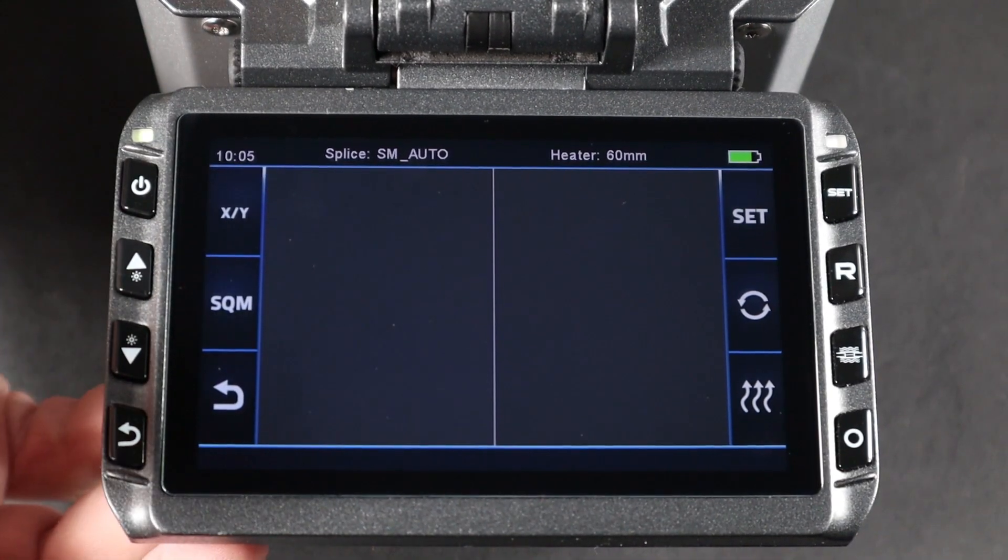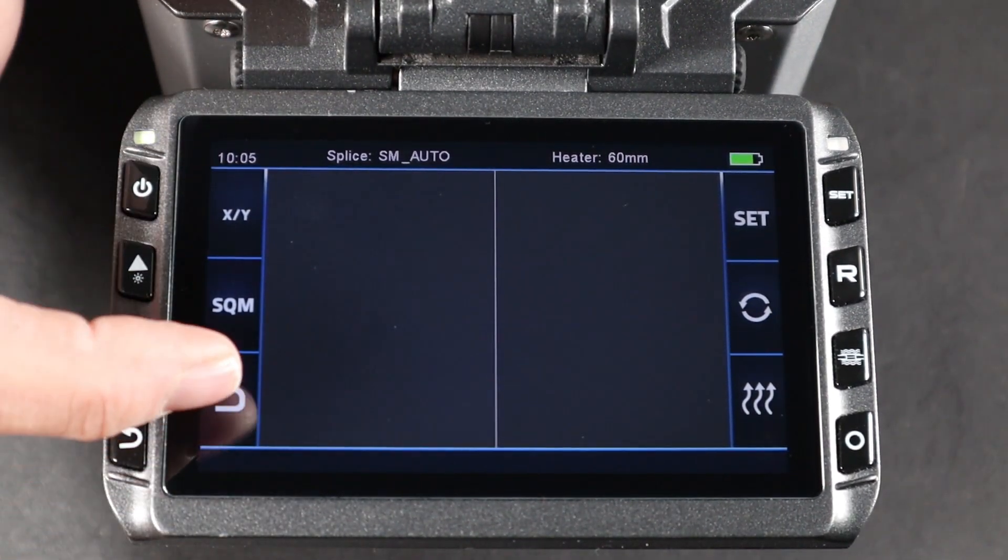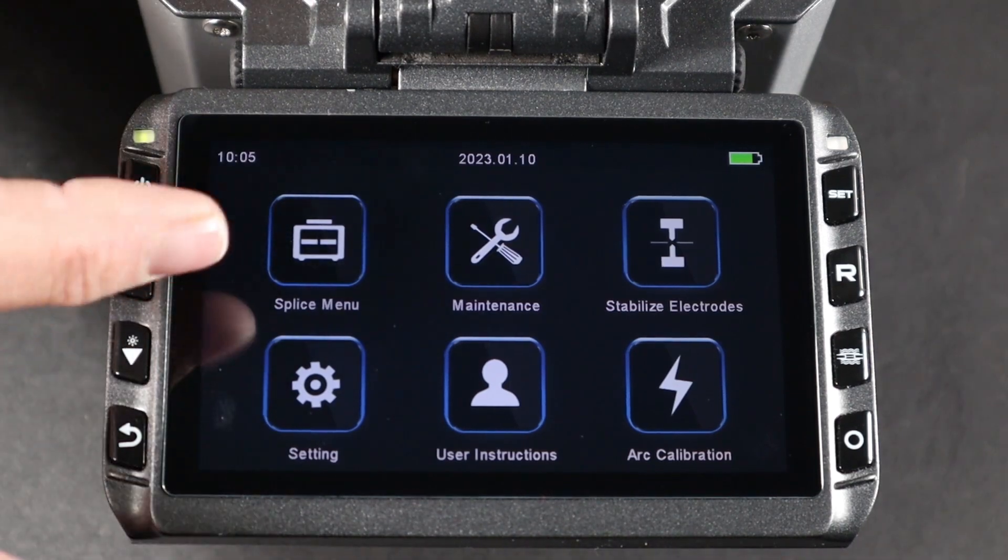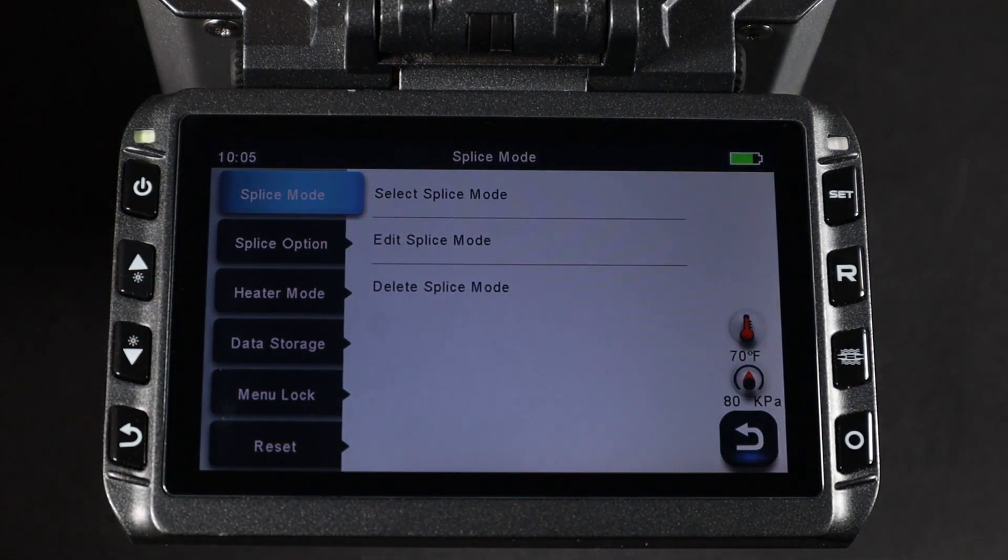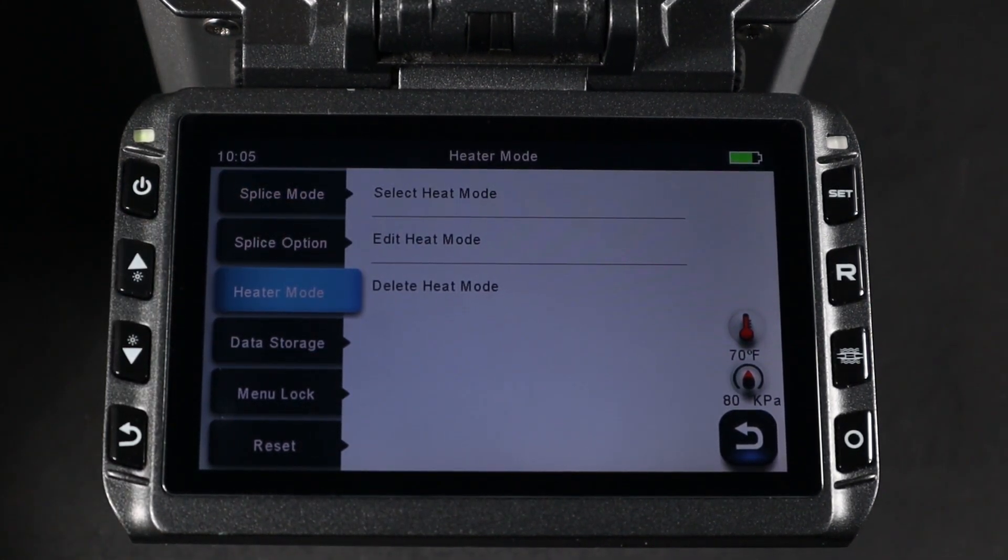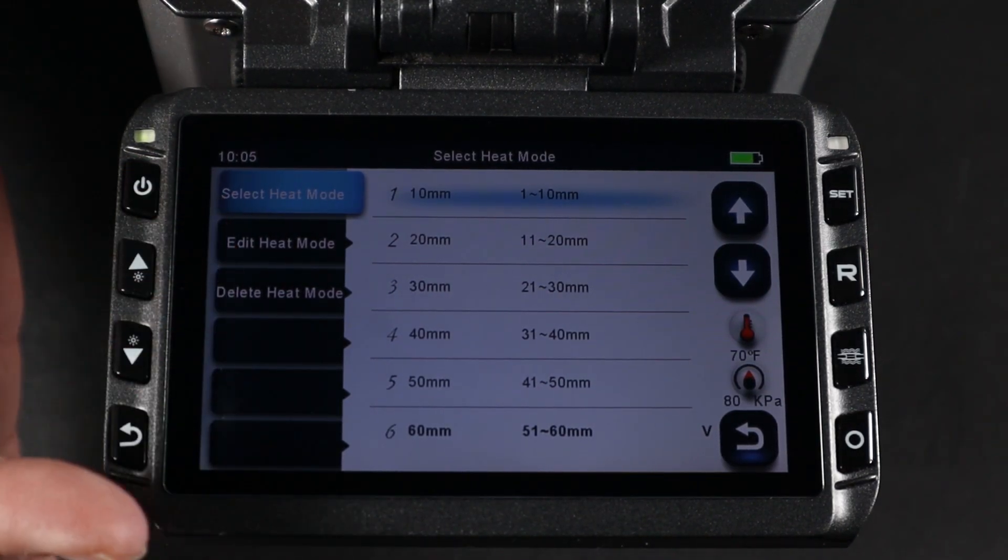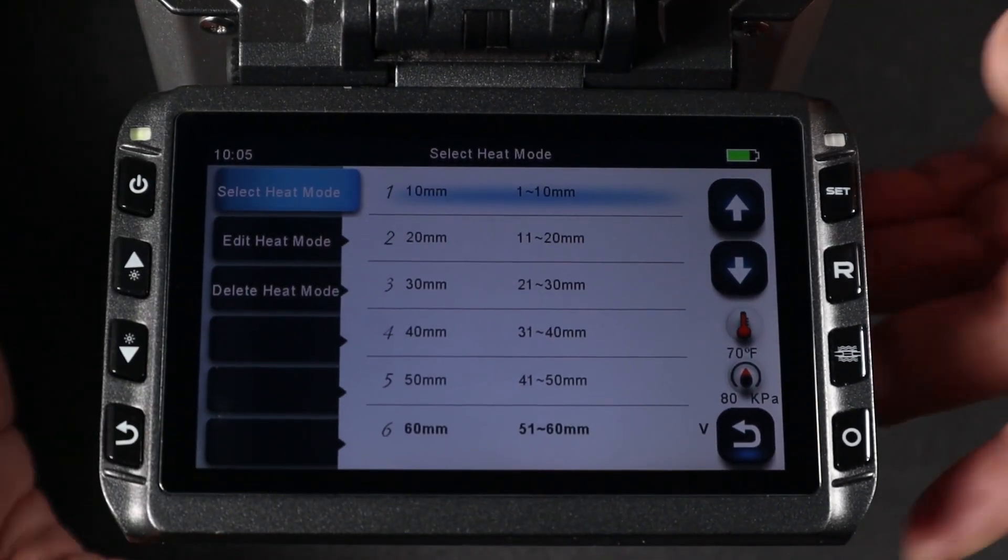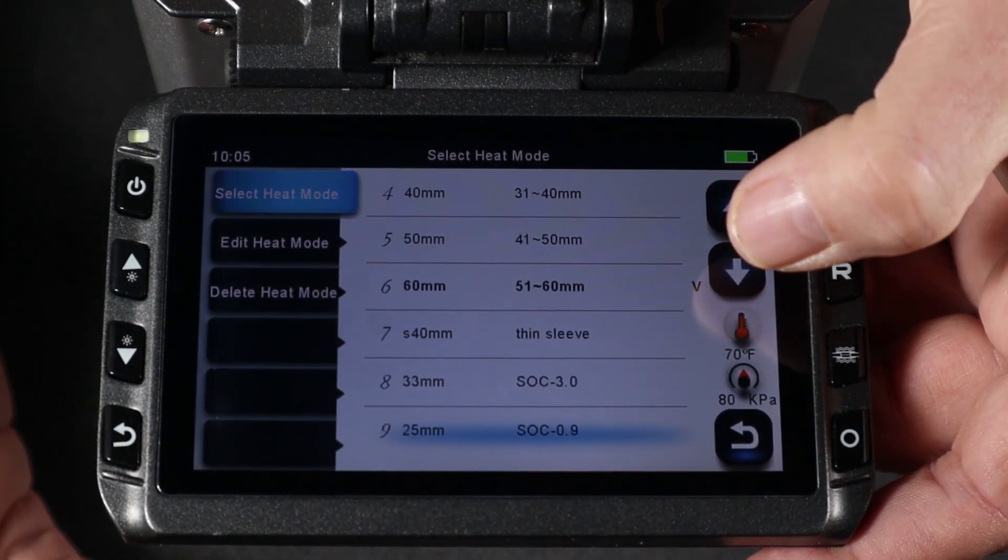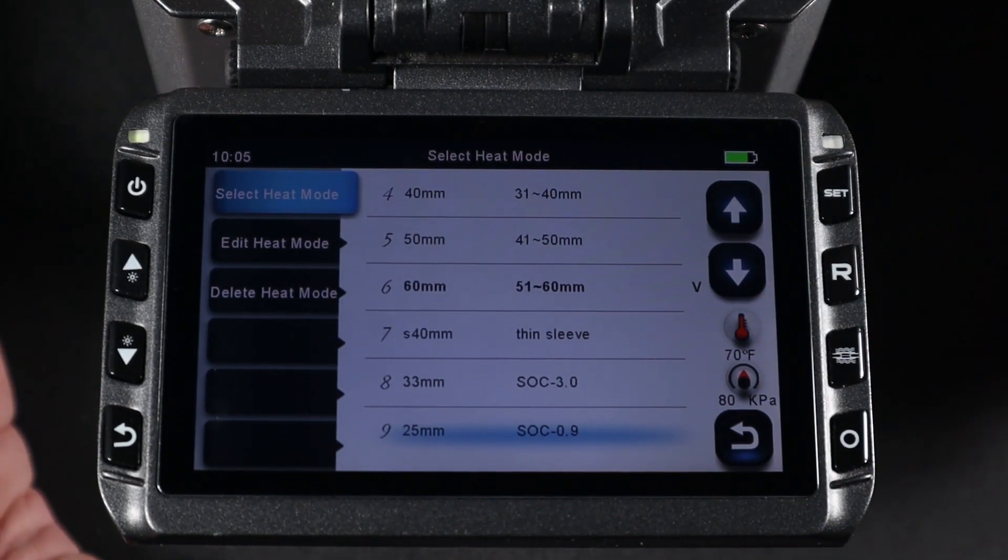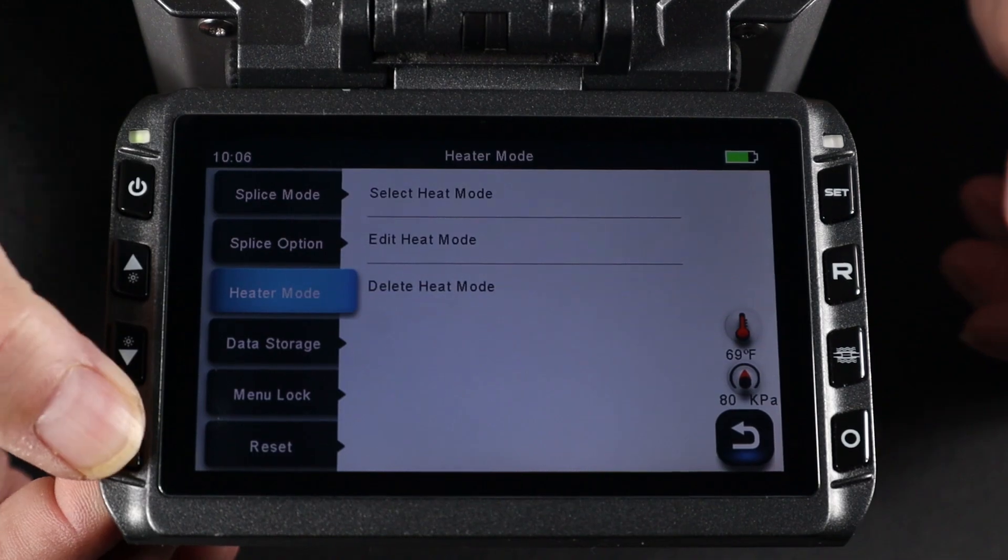Make sure your heat shrink is on the proper setting. To change, go into your main menu. Go into your splice menu. Go into your heater mode. Then select heat mode. Here you can find your proper heat mode. Just scroll down. Push your down button. And here are your splice on connectors. Once set, go back to the main splice screen.